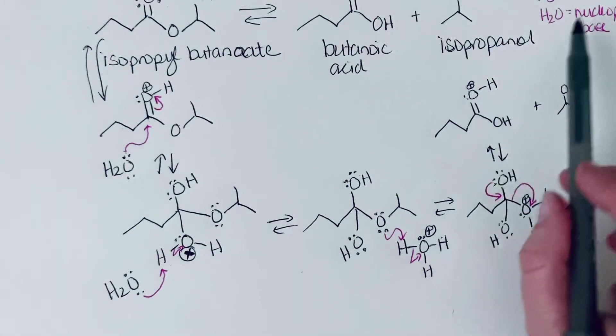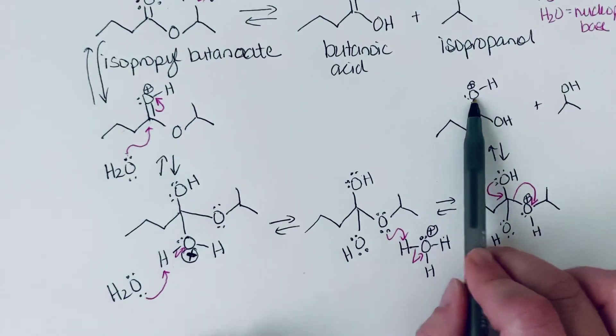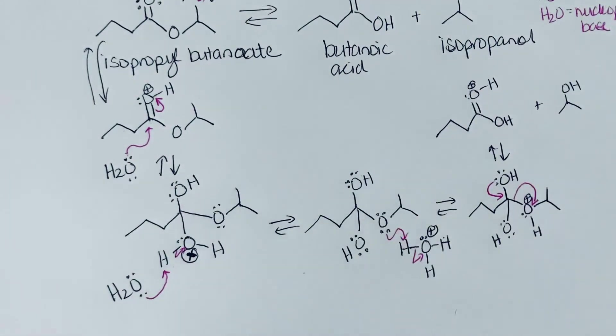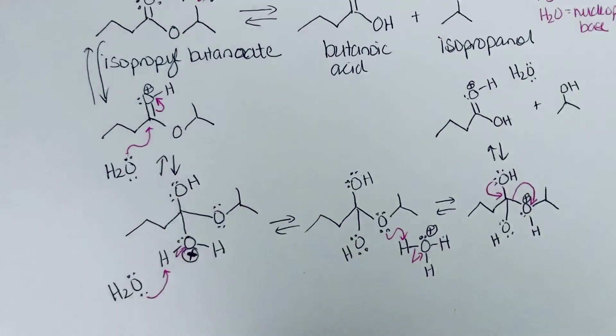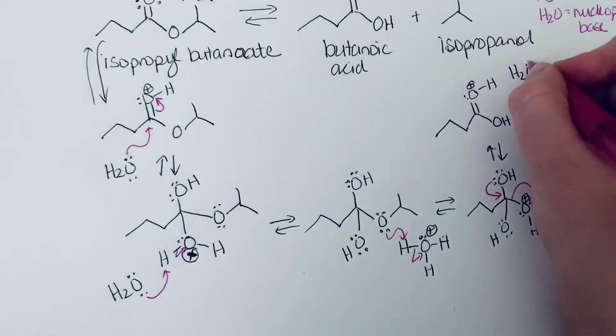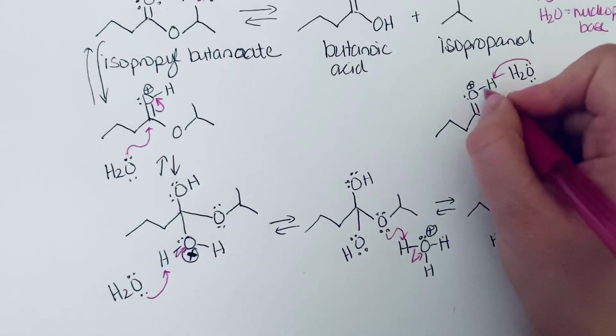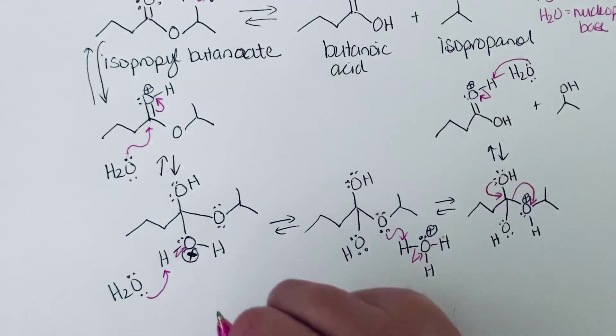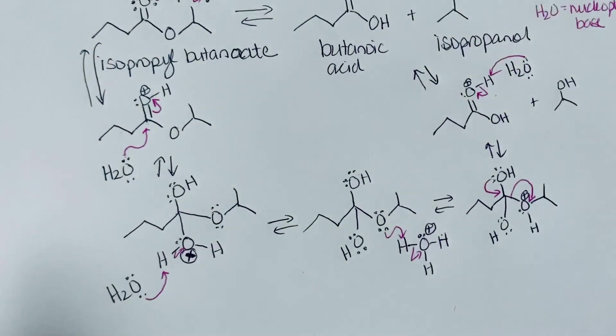So we'll remove this proton and also regenerate that acid catalyst again. So that overall we will not have consumed acid. Because every time we used it, we then regenerated it. So it truly is a catalyst in this solution. So there's that final step. So it's going to make H3O+. And we'll put these electrons onto the oxygen, making that into the neutral carboxylic acid.